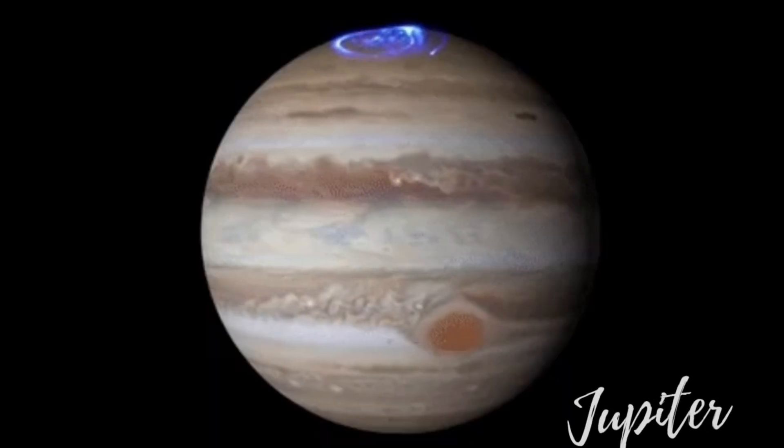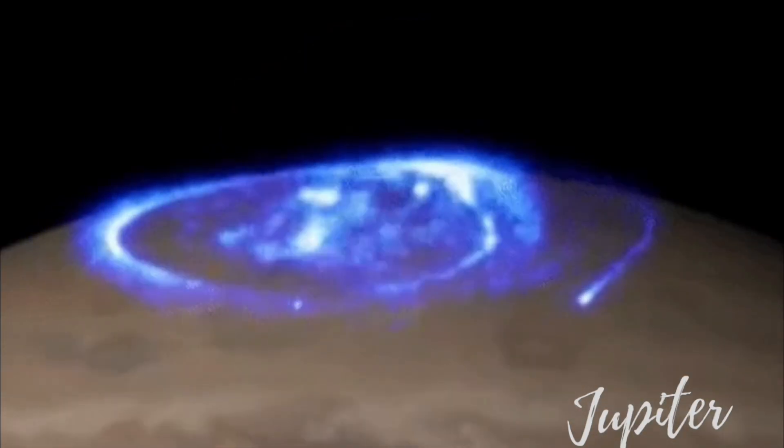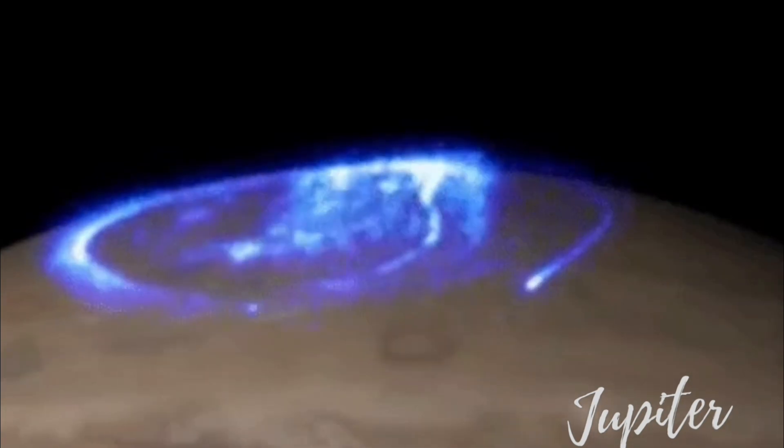Jupiter is the largest planet with big swirling storms. It's like a giant ball of gas and doesn't have a solid surface.